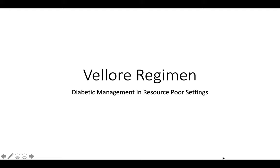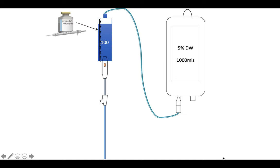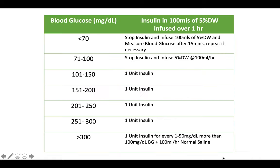In resource-poor settings, a practical regimen uses 5% dextrose 1000 mL with a paediatric burette. Fill the burette with 100 mL of 5% dextrose and add insulin per hour based on blood sugar: if blood sugar is less than 70 mg/dL, stop insulin and infuse plain 5% dextrose; 101–150 mg/dL — add 1 unit; 151–200 mg/dL — add 2 units; 201–250 mg/dL — add 3 units, and so on. Monitor blood sugar every hour and adjust accordingly. Run at 100 mL per hour.